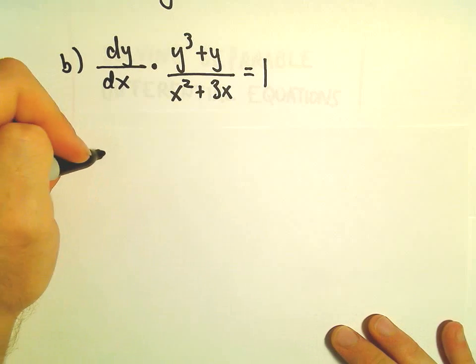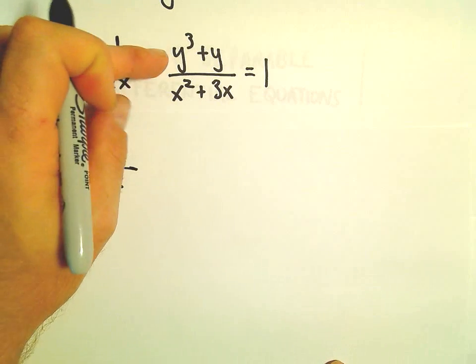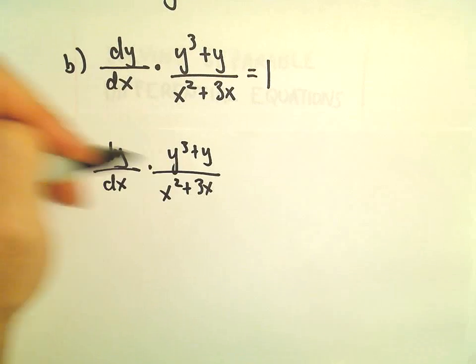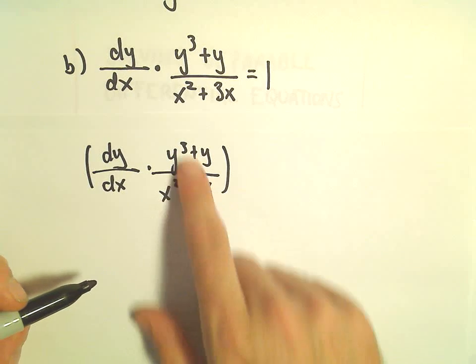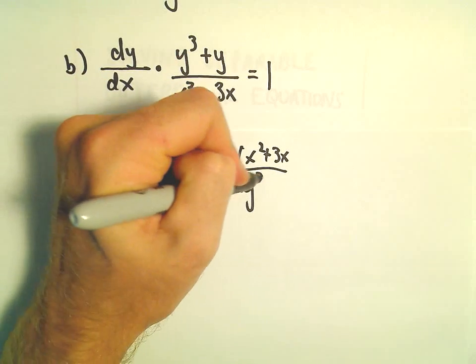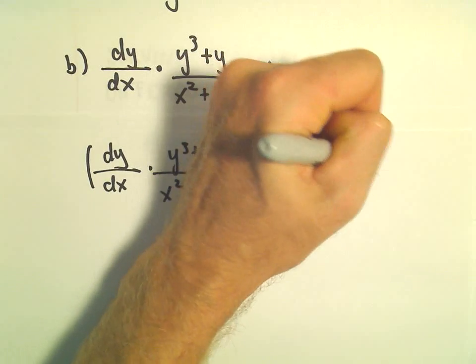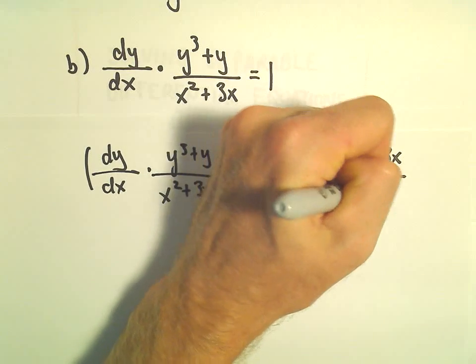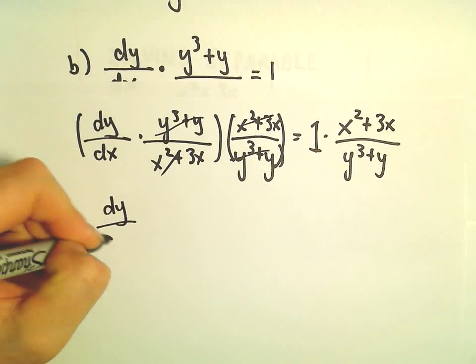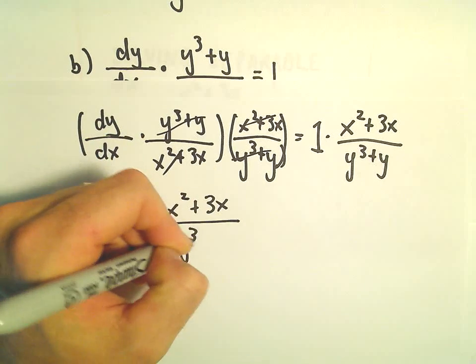The first thing I'm going to do is kind of break this up. So dy over dx. We could multiply both sides by y cubed plus y. I'm just going to simply multiply both sides by x squared plus 3x over y cubed plus y. So on the right side, we'll have to multiply by x squared plus 3x over y cubed plus y. On the left side, we can just get rid of everything. We'll be left with dy over dx equals x squared plus 3x over y cubed plus y.